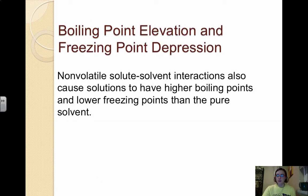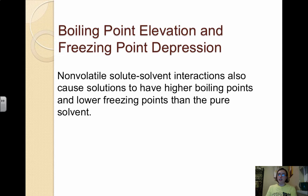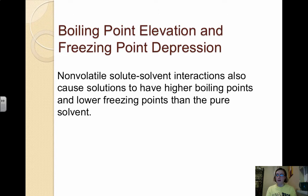Next we have boiling point elevation and freezing point depression. Vapor pressure has an effect on boiling point — remember that in order for something to boil, the vapor pressure has to equal atmospheric pressure. These solute-solvent interactions also affect boiling point and freezing point. Freezing point depression is why we add antifreeze — ethylene glycol — to a car's radiator: it lowers the freezing point of the solution so it has to get much colder to freeze. The added solute also raises the boiling point, allowing the engine to run at a much higher temperature.